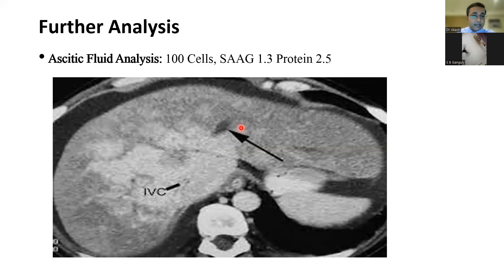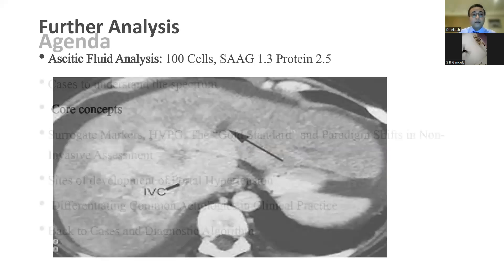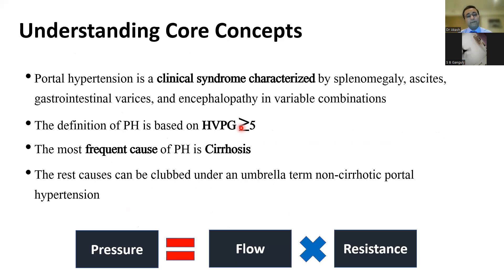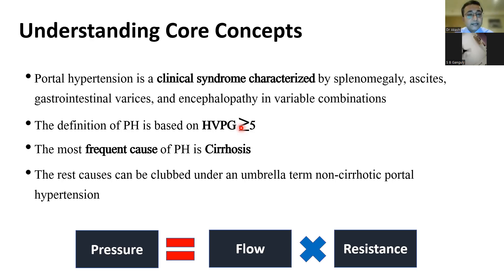We'll come back to all three cases at the end to see what these diagnoses are. But before that, we move on to understand the core concepts of portal hypertension. Portal hypertension has certain clinical manifestations we commonly see: splenomegaly, ascites, varices, and encephalopathy in various combinations. For historical perspective, the definition of portal hypertension has always been centered around a hepatic venous portal pressure gradient of more than 5. The most frequent cause in adults is cirrhosis, with the rest clubbed under non-cirrhotic portal hypertension.